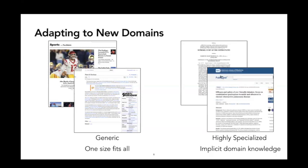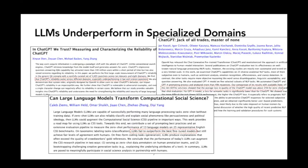In contrast, we want our LLMs to do well in domains like medicine and law, where the data is highly specialized and often requires implicit domain knowledge. This one-size-fits-all approach does not perform well in every specialized domain. Recently, several papers have shown that these generic LLMs still lag behind in performance when compared to specialized language models.